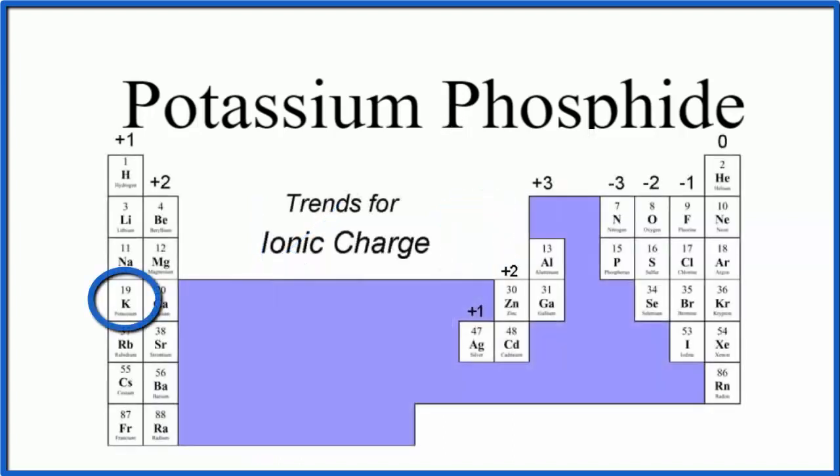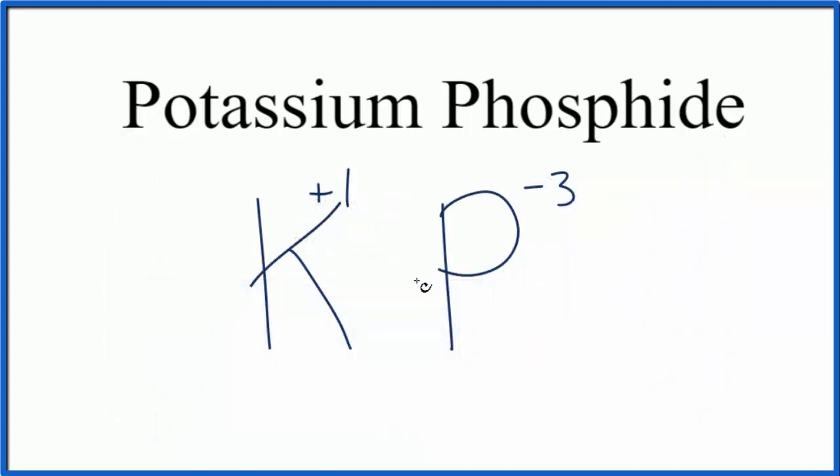We look on the periodic table, potassium is in group 1, it has a plus 1 charge, and phosphorus has a minus 3 charge. So the charges don't balance. What we want to have is a net charge of 0.